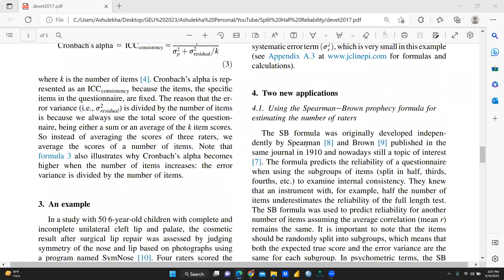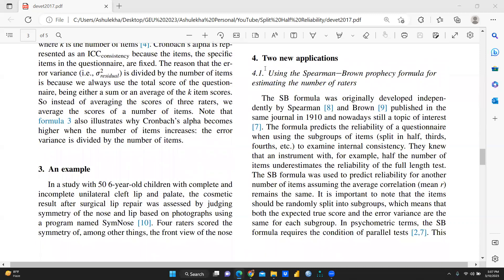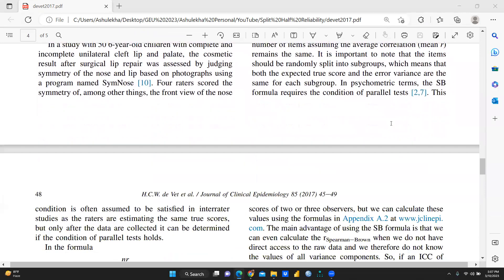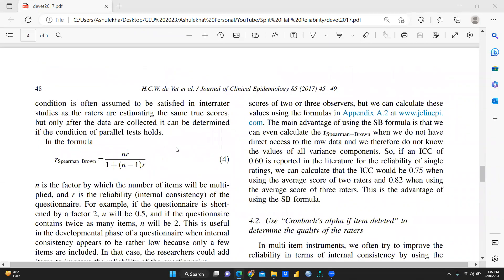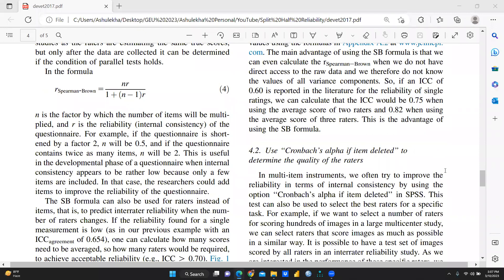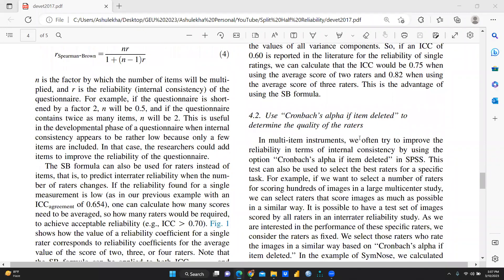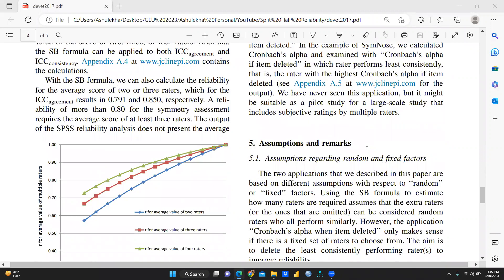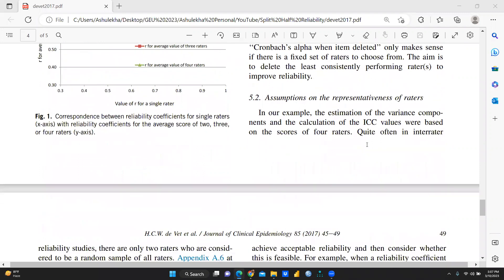As well as you can see here, there are two new applications, right? Using the Spearman-Brown prophecy formula for estimating the number of raters. And this is one very good example is also given here. I have already gone through this example. So I'm sure you have to also understand. And this same formula I have used in my previous video also. This one is the R Spearman-Brown. And Cronbach's alpha if item deleted to determine the quality of the raters. If suppose we want to check quality of the raters. Here are the assumptions and remarks.